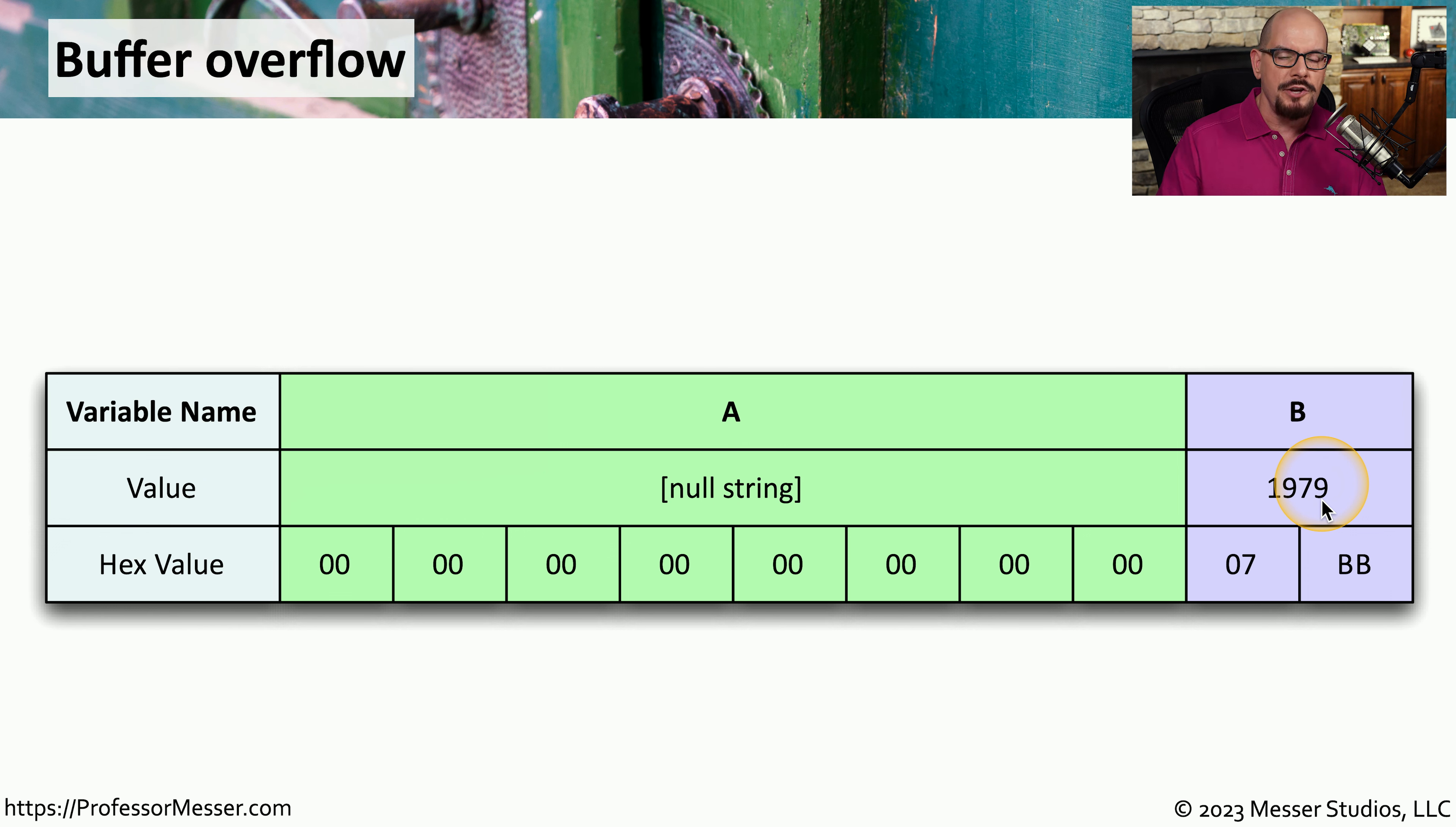For this particular application, variable B contains information on how this application should provide rights and permissions. And if this value is below 2,000, you have effectively user rights or guest rights for this application.